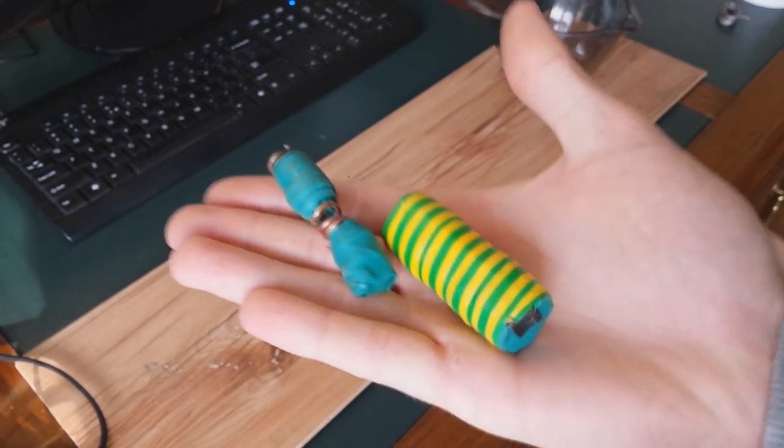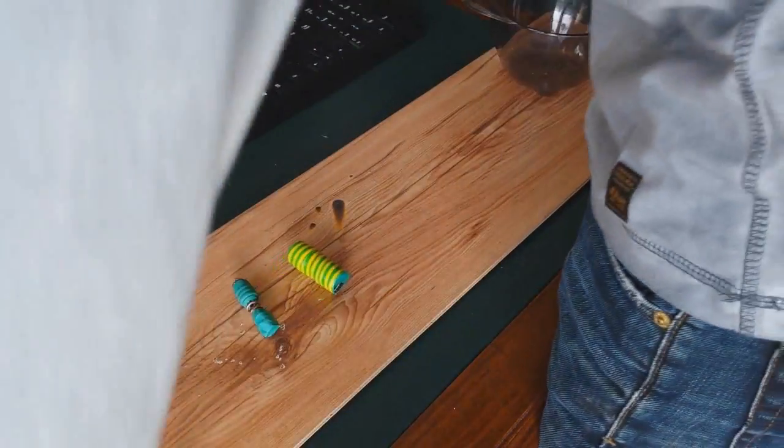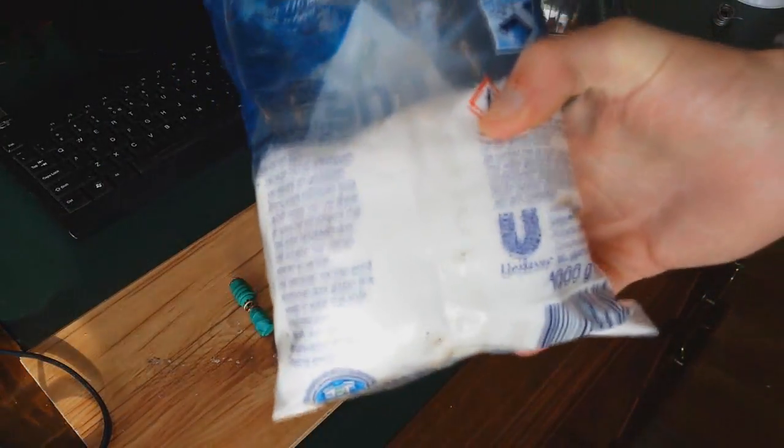So now that you have your homemade battery, you can start making the resin that goes inside. What you need for the resin is any kind of soda.